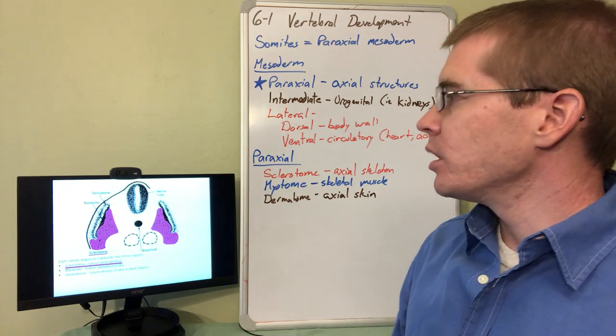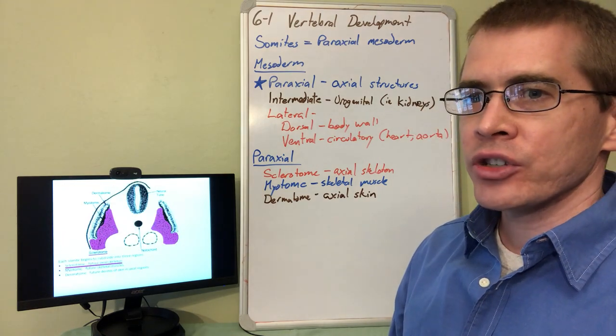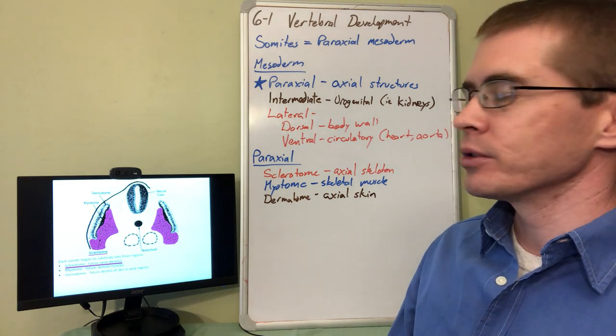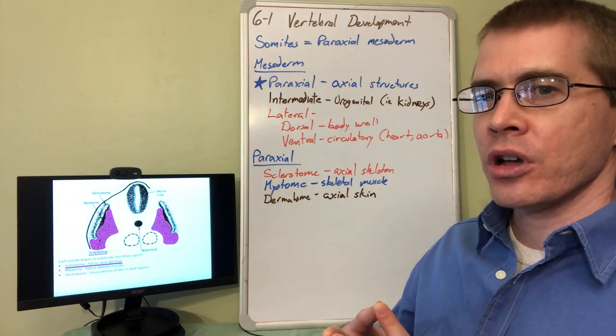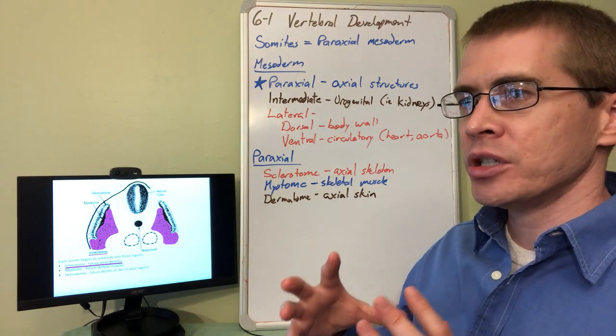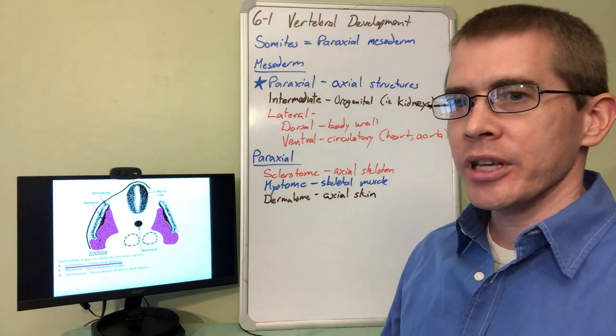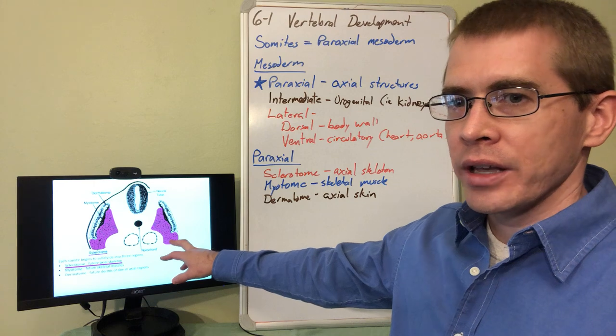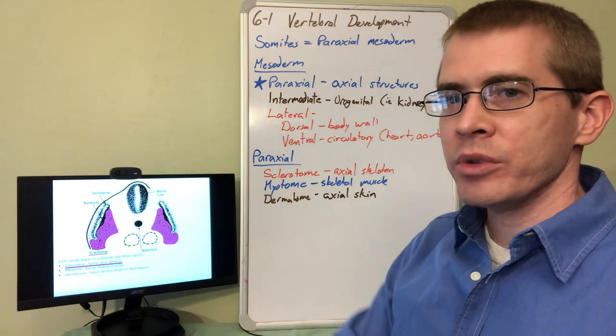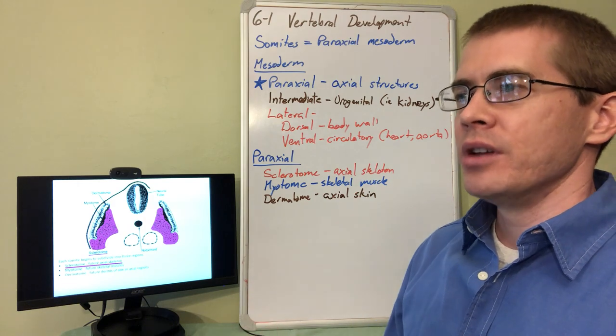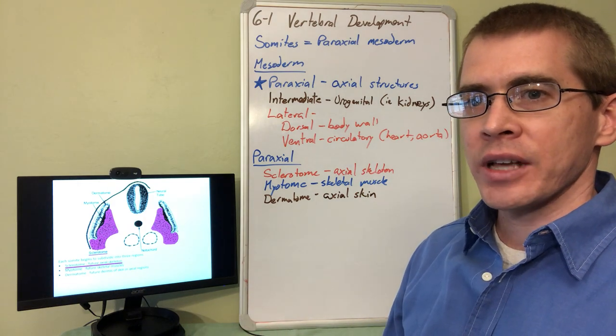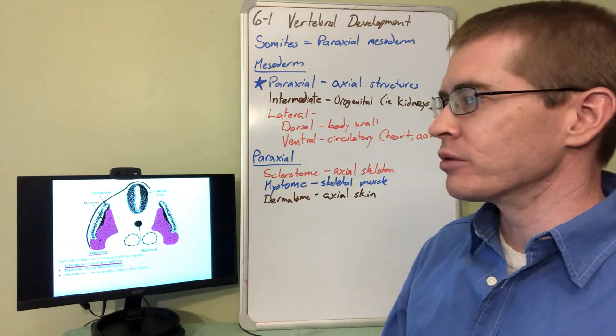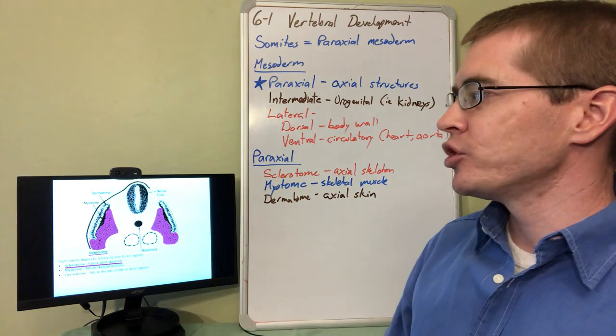As we move on, the paraxial mesoderm begins to differentiate into different structures and portions. All of these structures will have some function on the axial portion of the embryo. Here in pink we see the sclerotome. The sclerotome is the developmental term for the portions of the skeleton that derive from the paraxial mesoderm.